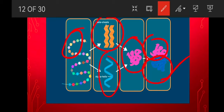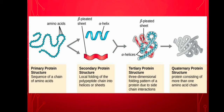The tertiary protein structure is the three-dimensional folding pattern of a protein due to side chain interactions, and the quaternary protein structure consists of more than one amino acid chain.